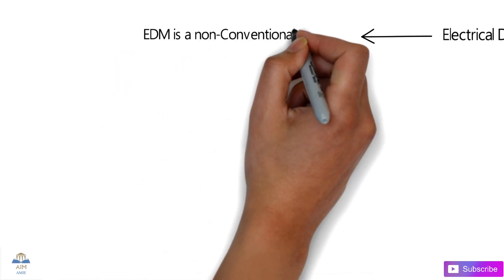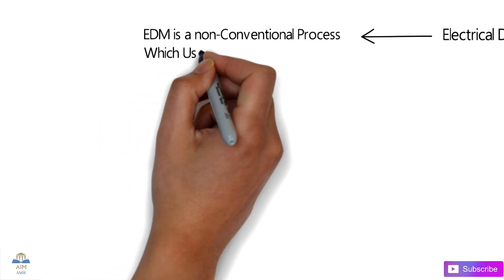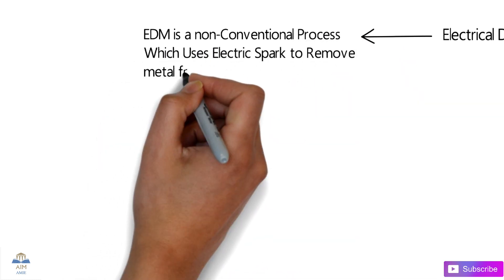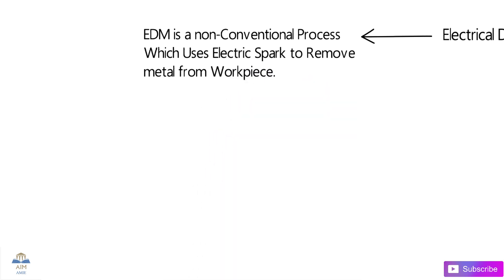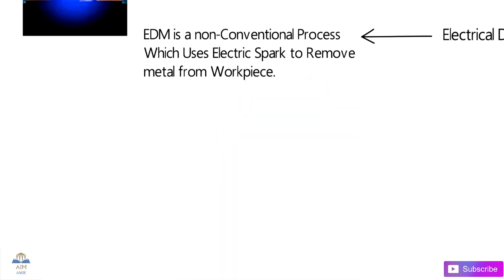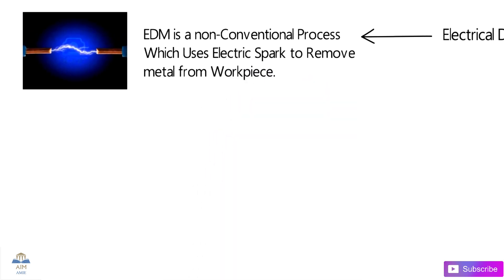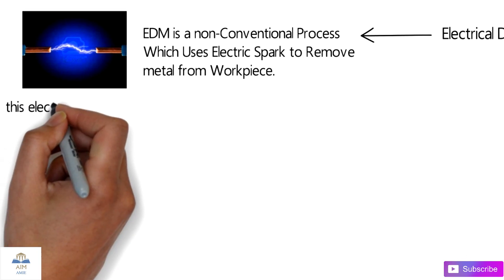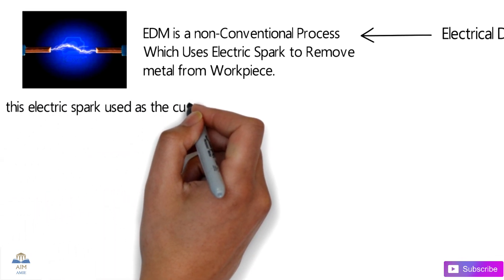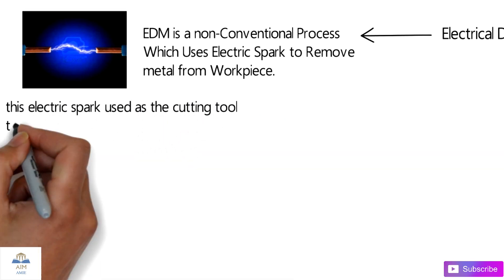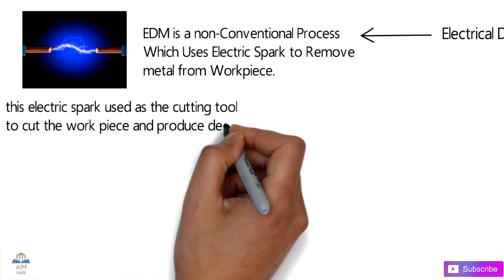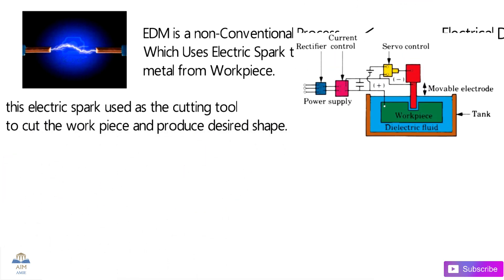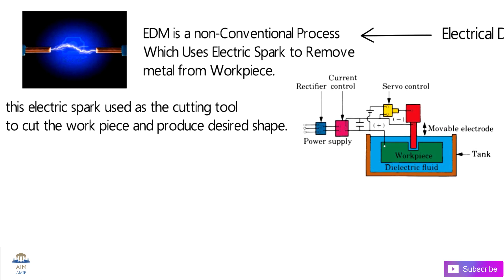EDM is a non-conventional process which uses the electric spark to remove metal from the workpiece. The metal is removed from the workpiece by means of this electric spark, which is used as a cutting tool to cut the workpiece and produce the desired shape.